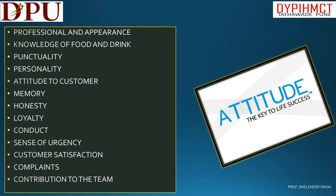Sixth is memory — it helps in knowing the likes and dislikes of repeat customers, where they like to sit, and their favorite food and drinks, which defines customer preference. Seventh is honesty — it is all important for staff in dealings with both the customer and management. Eighth is loyalty — staff's obligations and loyalty are firstly to the establishment and its management. Ninth is conduct — staff's conduct should be impeccable at all times, especially in front of customers. Tenth is sense of urgency — staff must develop a sense of urgency to contribute high net profit to the establishment.